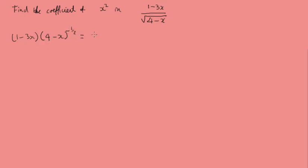This is the same as saying we've got (1-3x), and then we're going to take the 4 out, so it'll be 4 raised to the minus 1/2. Then we'll have (1 - x/4)^(-1/2). This here is just going to be 1/2, and we'll keep our (1-3x) here, and now we'll worry about what's in the brackets.